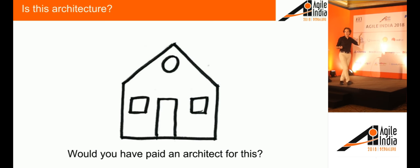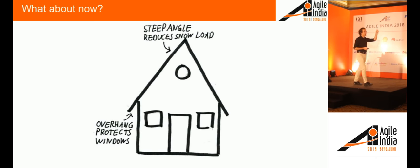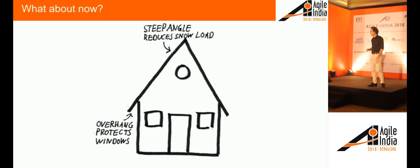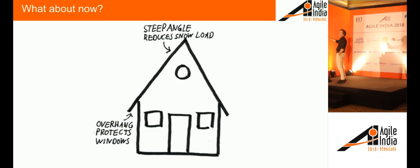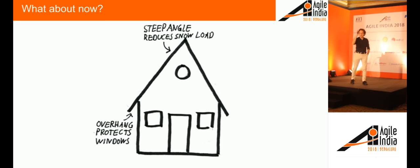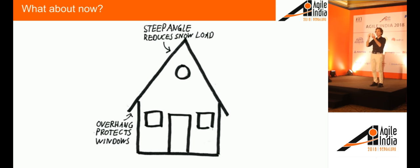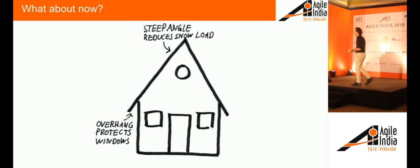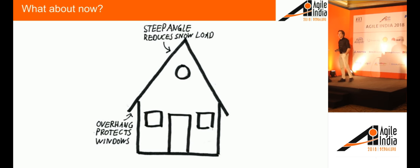A slightly different variation: a house with a funny pointed roof. The roof is so pointed because it's in a cold climate where it snows a lot — and snow is heavy, so it can crush your structure. They made a very pointed roof so the snow gets off. Here is a decision. That makes architecture — somebody put some thought in it — and for this you might have actually paid an architect.